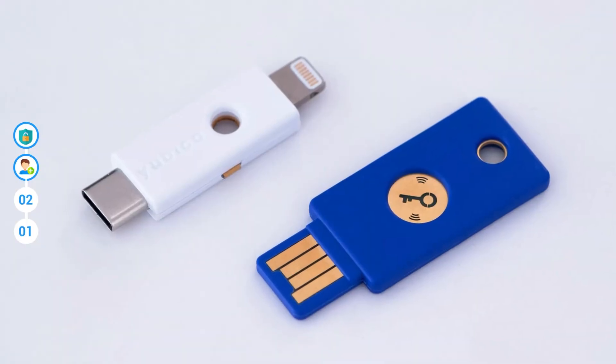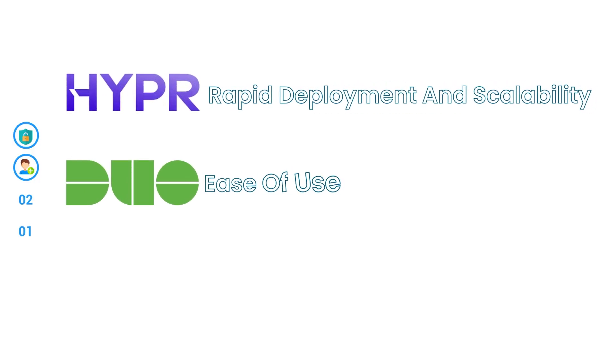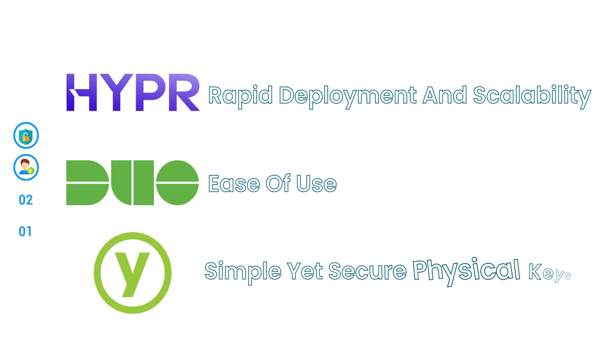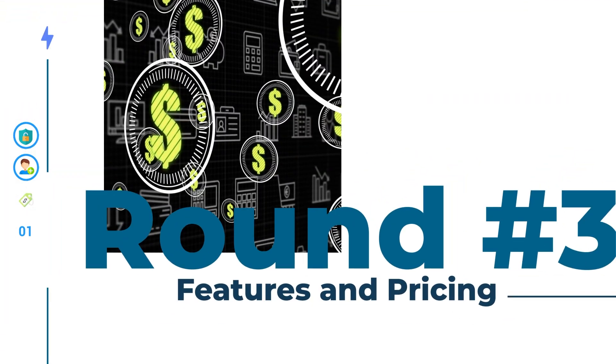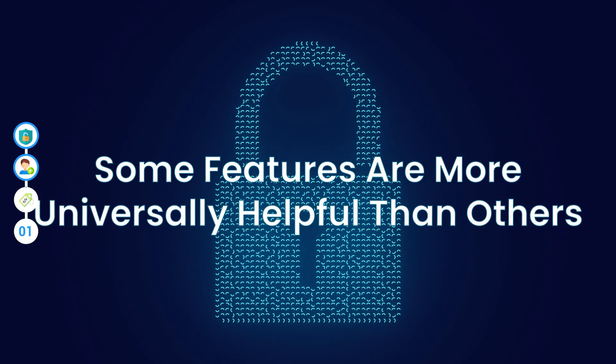Granted, with physical keys, there are only so many people you can enroll in a short time. Hyper's rapid deployment and scalability, Duo's ease of use, and Yubico's simple yet secure physical keys highlight the importance of efficient and user-friendly enrollment processes in enhancing security. Each of these authentication apps specializes in different but similar areas, so some of these features will appeal to you more than others. Still, some features are more universally helpful than others.